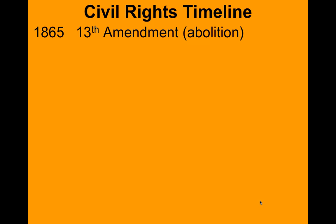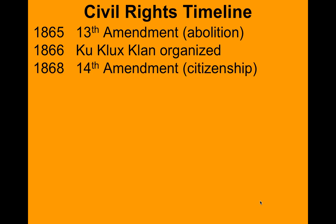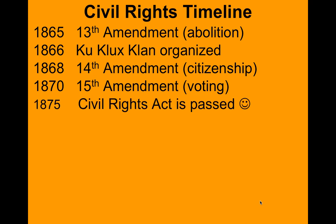A couple amendments to the Constitution follow. In 1865, we have the 13th Amendment, which called for the abolition of slavery. A big response to that was the formation of the hate group Ku Klux Klan. In 1868, we had the 14th Amendment, which called for equal citizenship. In 1870, we had the 15th Amendment, which gave all citizens the right to vote.